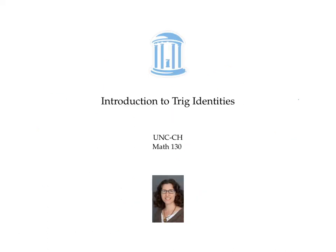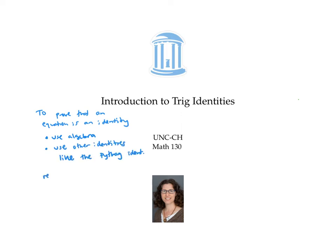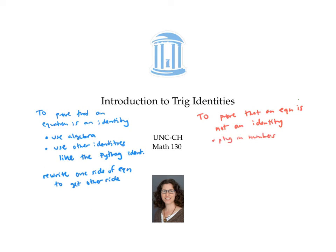The best way to prove that an equation is an identity is to use algebra and other identities, like the Pythagorean identity, to rewrite one side of the equation until it looks like the other side. The best way to prove that an equation is not an identity is to plug in numbers that break the identity — that is, make the equation not true. If you're just trying to decide whether an equation is an identity, I recommend plugging in numbers or graphing the left and right sides to see if those graphs are the same.